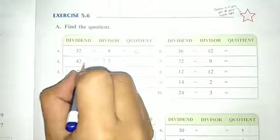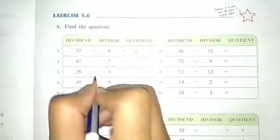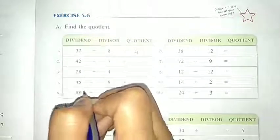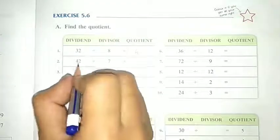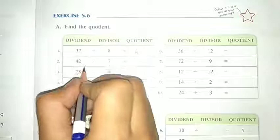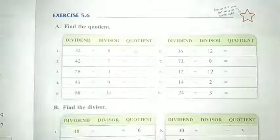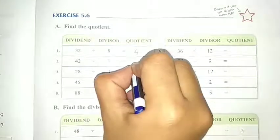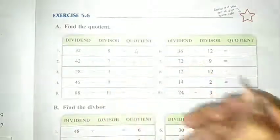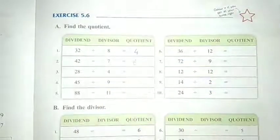Second: 42 divided by 7. 7 का table बोलिए जब तक आपको 42 नहीं मिलते. 7 6s are 42. So our answer is 6.